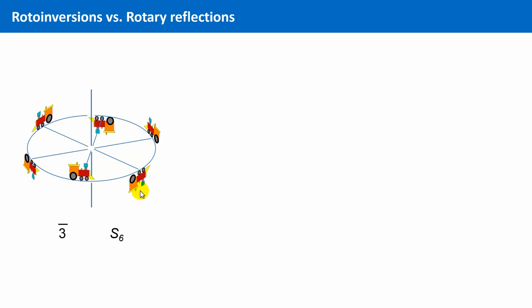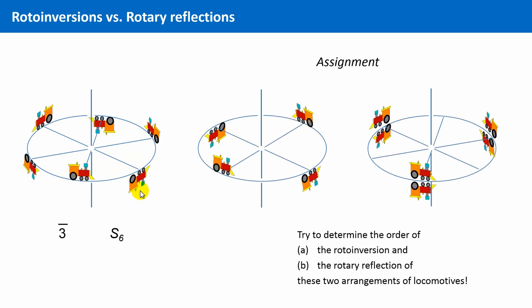Okay, to practice this a little more, you can do the following assignment. Try to determine the order of a, the rotoinversion, and b, the rotary reflection of these two arrangements of locomotives.